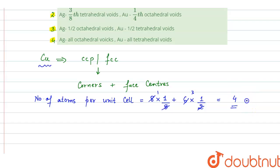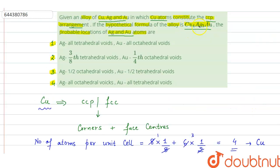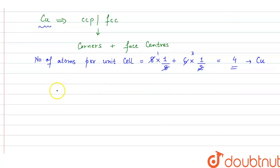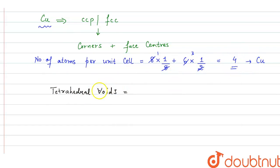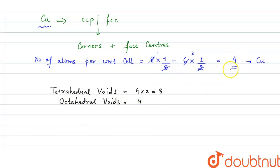These are the copper atoms arranged in FCC, so copper equals 4. We have 4 atoms of copper, which matches the formula Cu4. Now, in a unit cell, the number of tetrahedral voids is double the number of particles, so tetrahedral voids = 4 × 2 = 8. And octahedral voids equal the number of particles in the unit cell, so octahedral voids = 4.